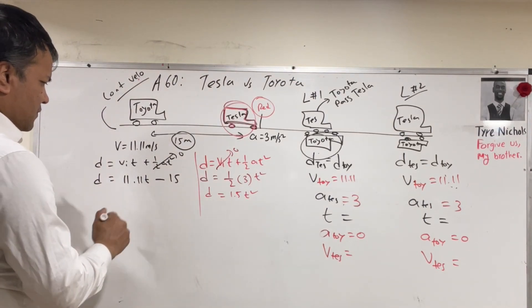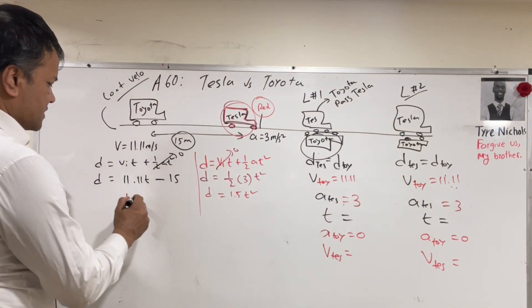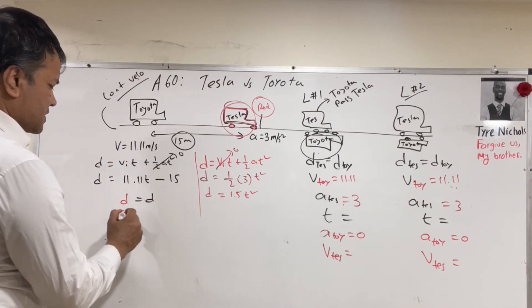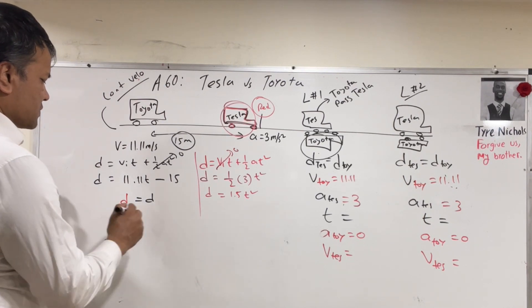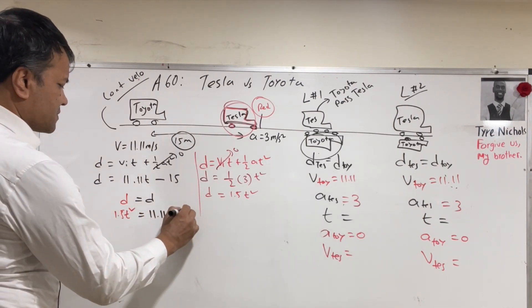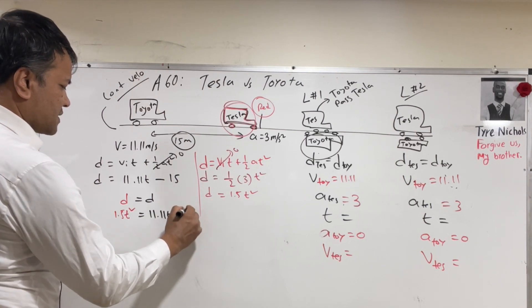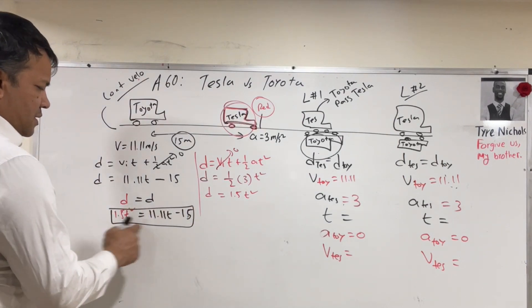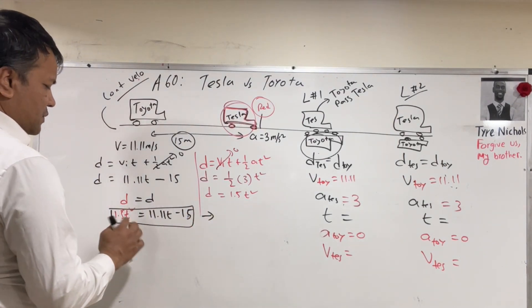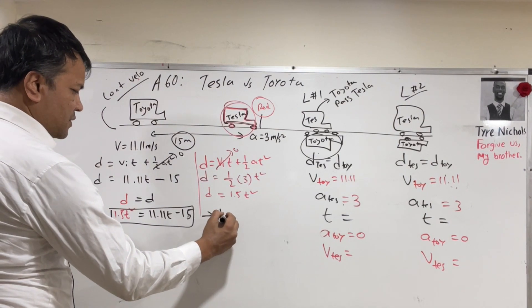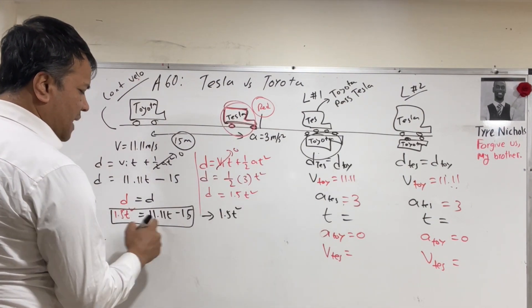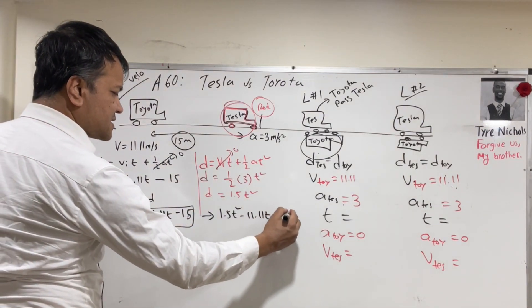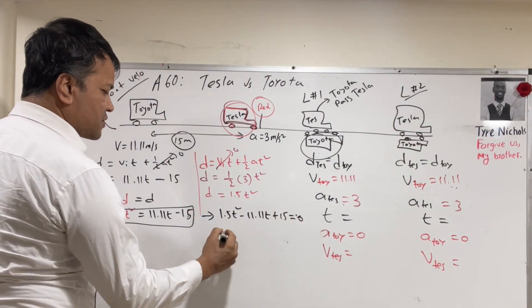We set d equal to d: 1.5t² = 11.11t − 15. Moving everything to the left side gives 1.5t² − 11.11t + 15 = 0. Now we solve this using the quadratic formula: t = (−b ± √(b² − 4ac)) / 2a.